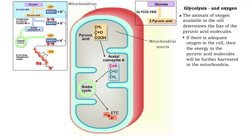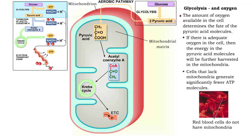However, if there is adequate oxygen, the pyruvic acid will be further harvested for much more energy in the mitochondria. Cells that lack mitochondria generate significantly fewer ATP molecules.